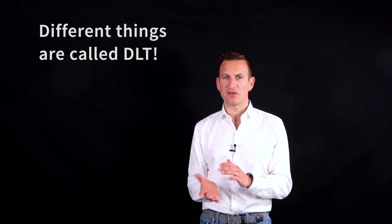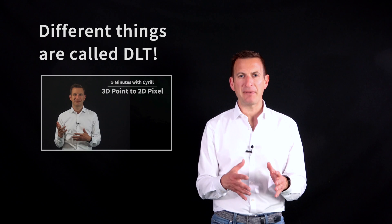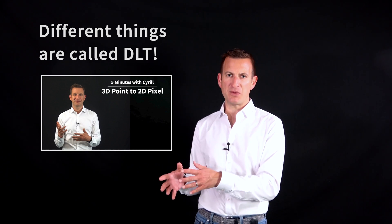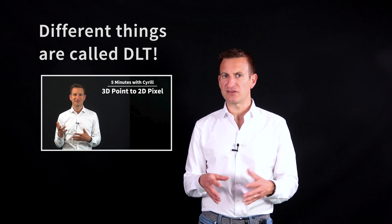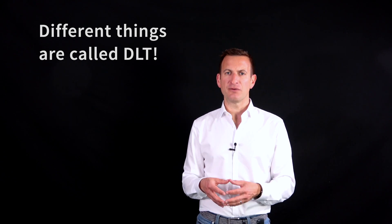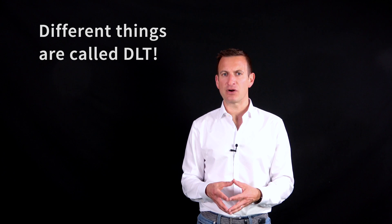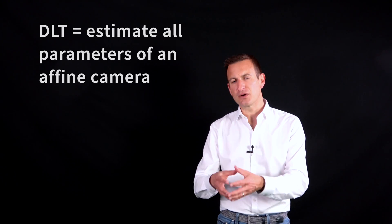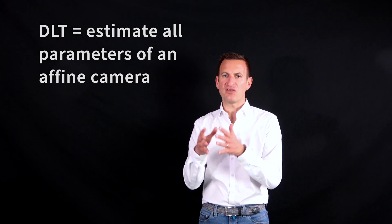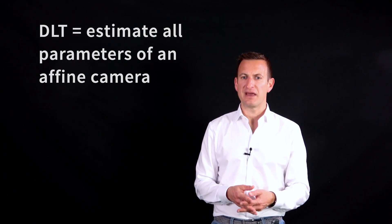You have to be a bit careful what DLT actually refers to. Some people call the DLT the mapping that maps a point from the 3D world onto the 2D image plane using the so-called pinhole camera model, and other people refer to it as the approach to estimate the parameters of this pinhole camera model. We are here referring to the approach that I use in order to estimate the parameters of that camera model.